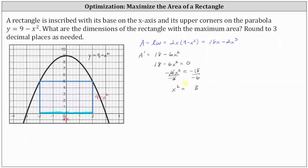Algebraically, we have two solutions — one positive and one negative. To get both solutions, we include a plus or minus on the right, giving us x equals plus or minus square root of 3. But since x represents a length, we exclude the negative value, so x equals square root of 3.